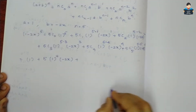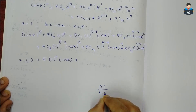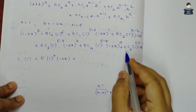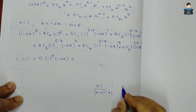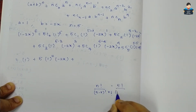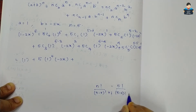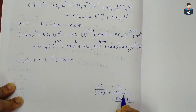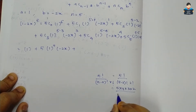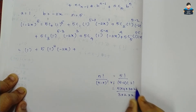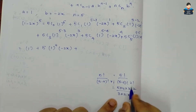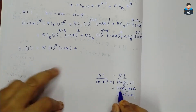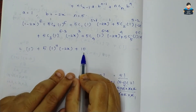We compute 5C2 = 5! / (5-2)!·2! = (5×4×3×2) / (3×2×2×1). Cancelling 3×2 from numerator and denominator, we get 5×4/2 = 10. So 5C2 = 10.